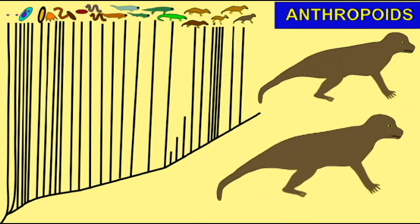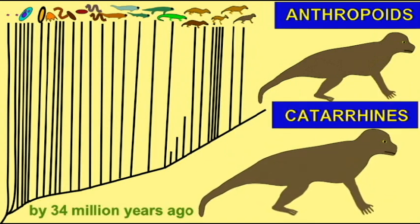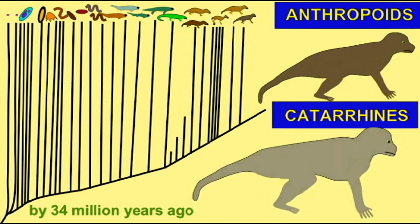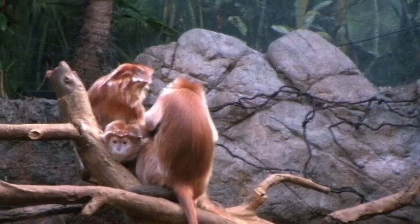After new world monkey lineages diverged, a group of primates evolved in the anthropoid group known as the catarine primates. These include old world monkeys and apes. Old world monkeys are more closely related to apes than to new world monkeys. About 33 million years ago, there is a fossil known as Egyptopithecus, which represents a form considered to be ancestral to both old world monkeys and apes.